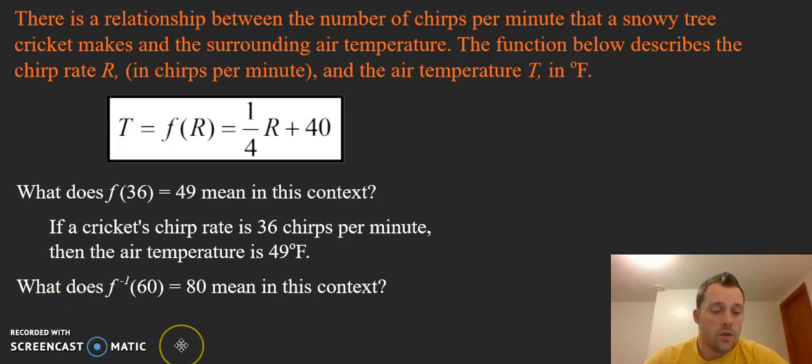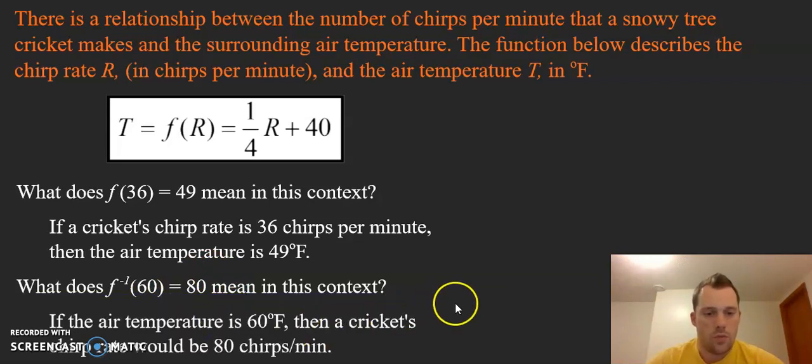This other example, f inverse of 60 equals 80—we have to remember that inverse functions flip the X and Y values around, or the input and output. So 60 won't represent the chirp rate. If the temperature is 60 degrees, then the chirp rate is going to be 80 chirps per minute.